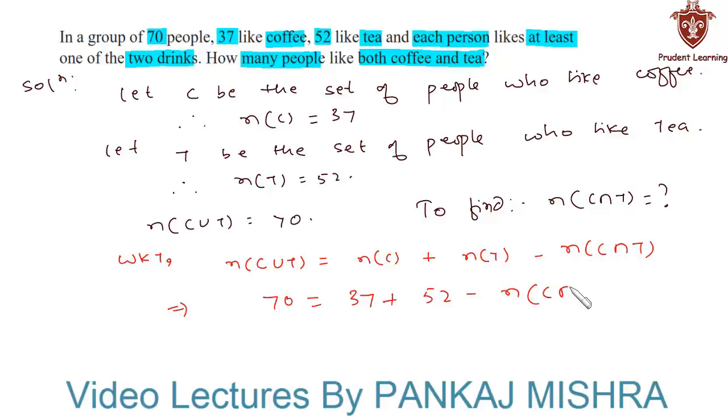We can say that the number of elements in C intersection T is equal to 89 minus 70, which equals 19. Hence, there are 19 people in the group who like both coffee and tea.